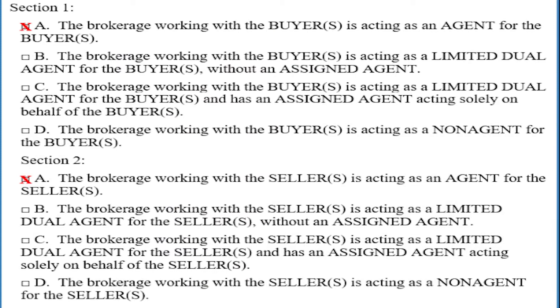Oh, that's why my contracts keep getting sent back to me corrected. Yes, and that's why I've brought a few contracts here as examples. Now, on this first contract, Jill, option A has been selected for both the buyer and the seller in the representation confirmation section. However, Tom's team is working with the seller, and your team is working with the buyer.